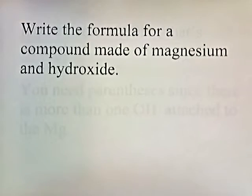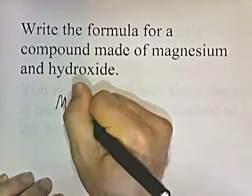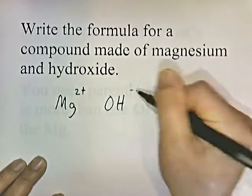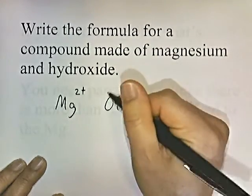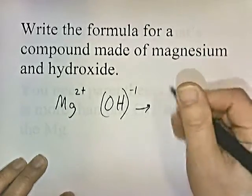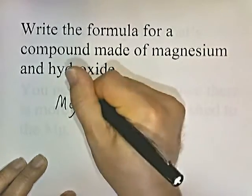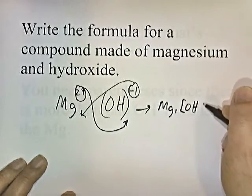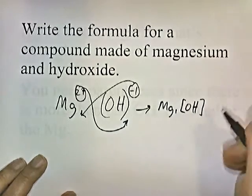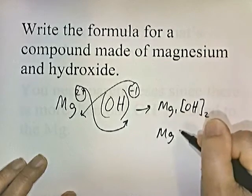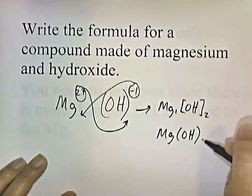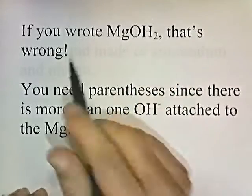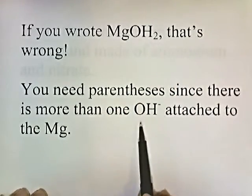Write the formula for a compound made out of magnesium and hydroxide. Magnesium (Mg) is in group two, so it has a plus two charge. Hydroxide is OH with a negative one charge. Put parentheses around hydroxide with the charge outside, criss-cross the numbers. This gives Mg1(OH)2, which simplifies to Mg(OH)2. Parentheses are required here since there is more than one OH attached to the Mg — omitting them would be wrong on an exam.